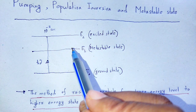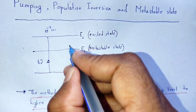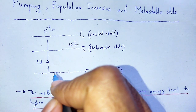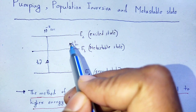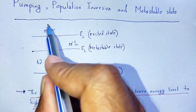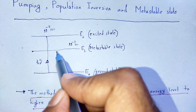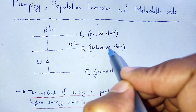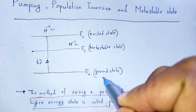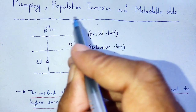At the metastable state, the time duration is around 10 to the power minus 3 seconds. Since 10 to the power minus 3 seconds is very much larger compared to 10 to the power minus 8 seconds, the number of particles at the metastable state is much greater compared to the ground state, and that process is known as population inversion.